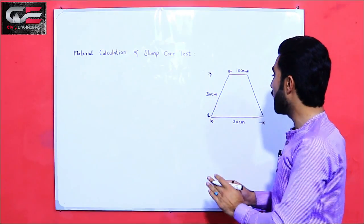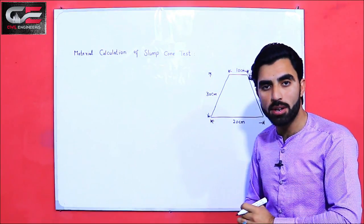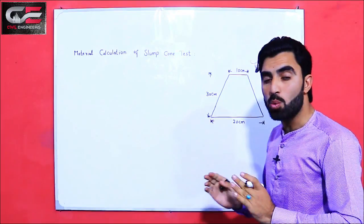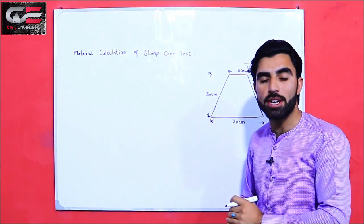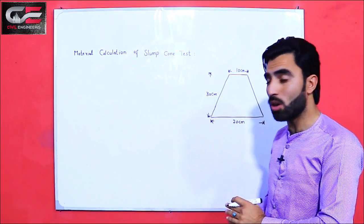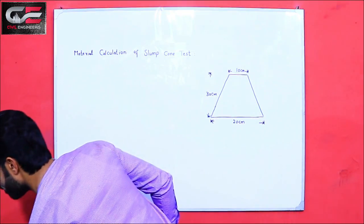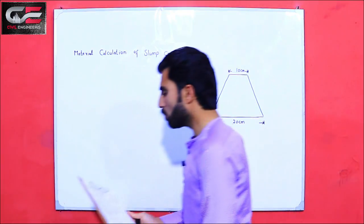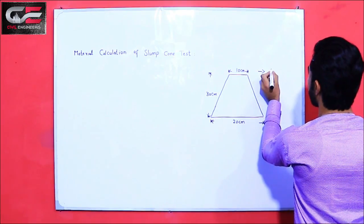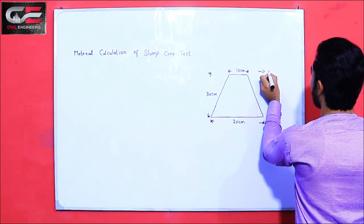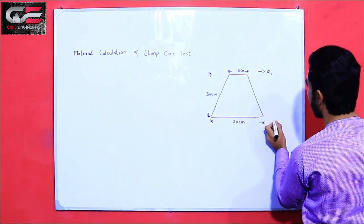First of all, we will find the volume of this cone, then we will find the different material calculations. So first of all, we will find area 1 and area 2.